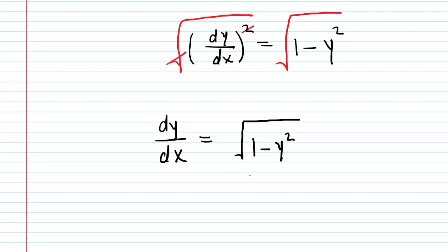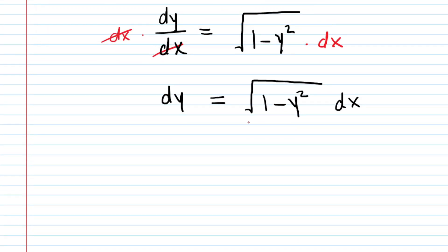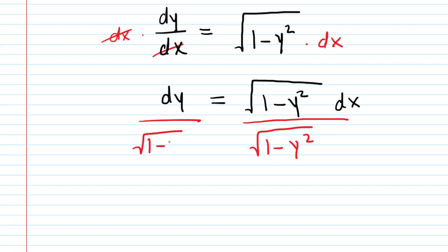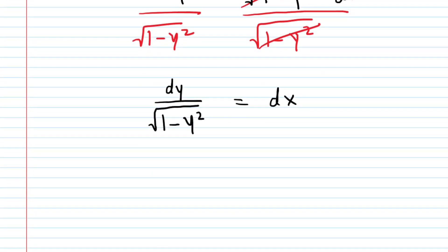There is our current form of the differential equation. As noted, we're trying to separate variables. The next step is to multiply both sides by dx so we can cancel dx on the left side. Then, to continue separating variables, we divide both sides by the square root of 1 minus y squared, canceling that term on the right side. We have now separated the variables.